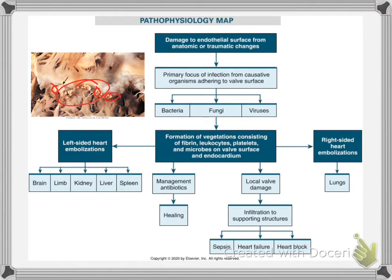Diagnostic criteria includes that a person has at least two major criteria, meaning they need to have two of the following: either a positive blood culture, evidence of endocardial involvement, or new valvular vegetations found on an echocardiogram.